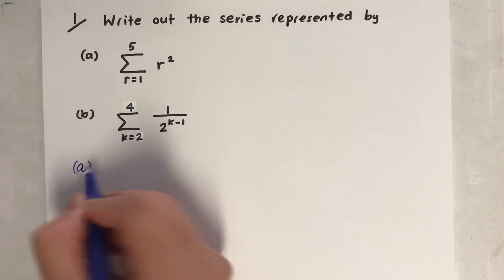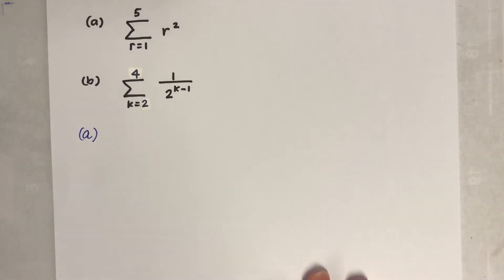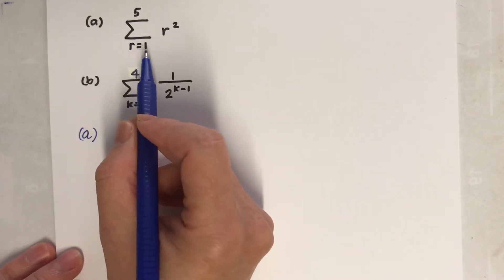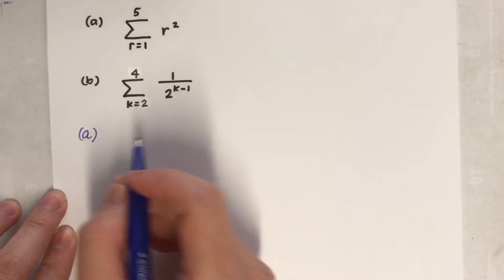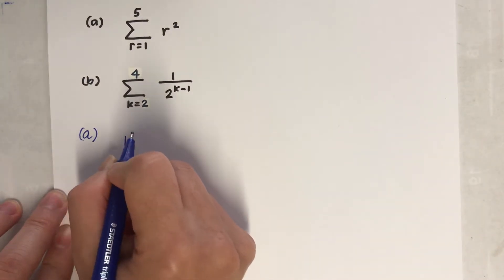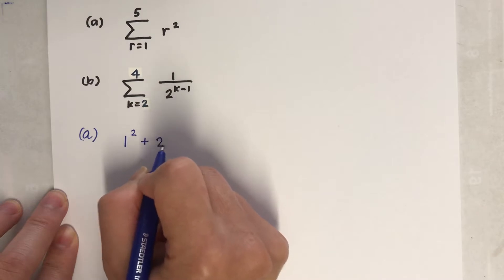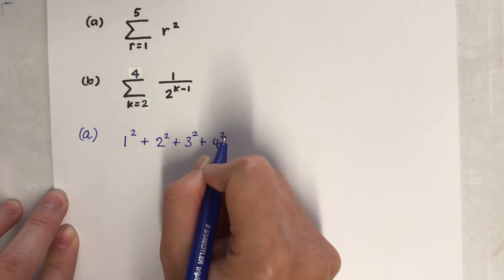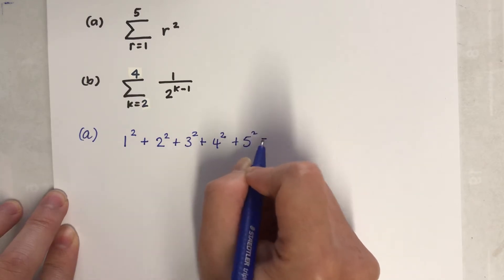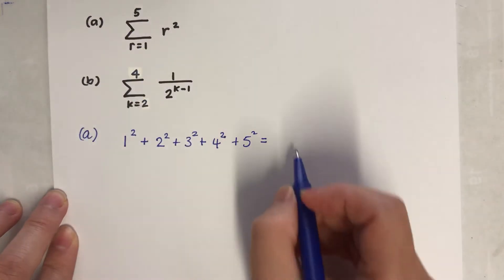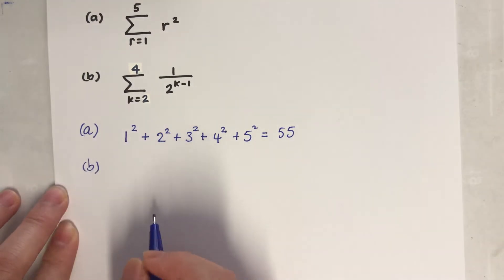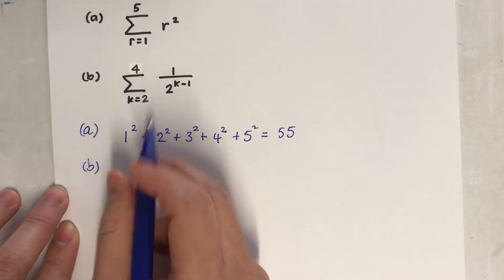Let's start with part a. There are five terms, starting at 1, so I'm going to write: 1 squared plus 2 squared plus 3 squared plus 4 squared plus 5 squared, and stop there because there are only five terms. If you calculate that you will get 55.